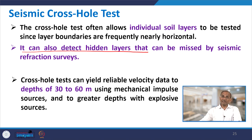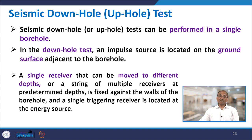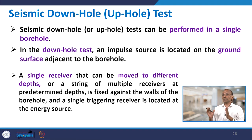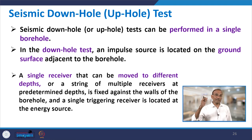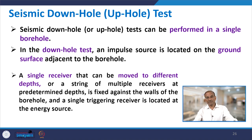The cross hole test can yield reliable velocity data to depths of 30 to 60 meters using mechanical impulse sources, and to greater depths with explosive sources. Using a single borehole, the test can also be conducted as either a seismic down hole or seismic up hole test, depending on the location of the receiver. If the receiver is on the ground surface it is called the up hole test; if the receiver is inside the borehole it is called the down hole test.